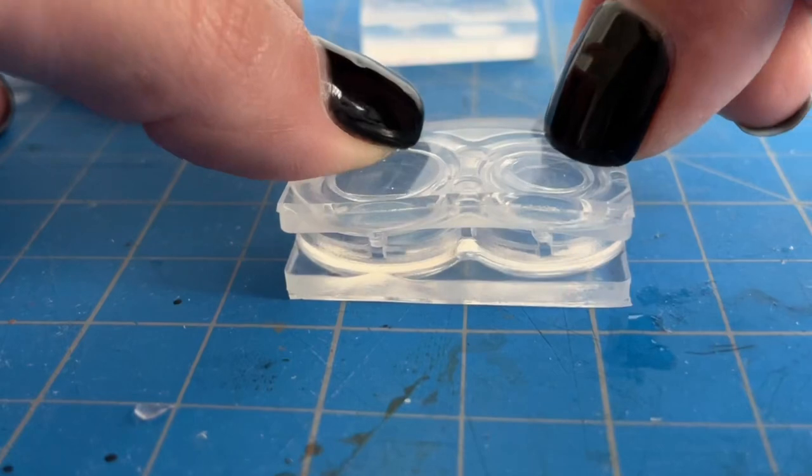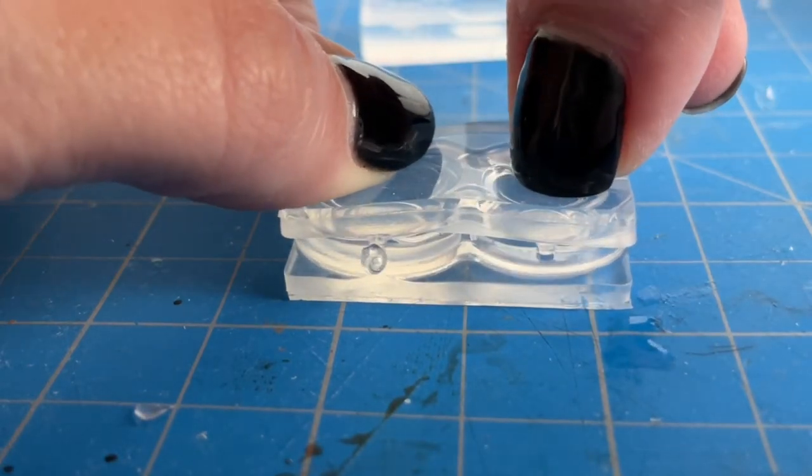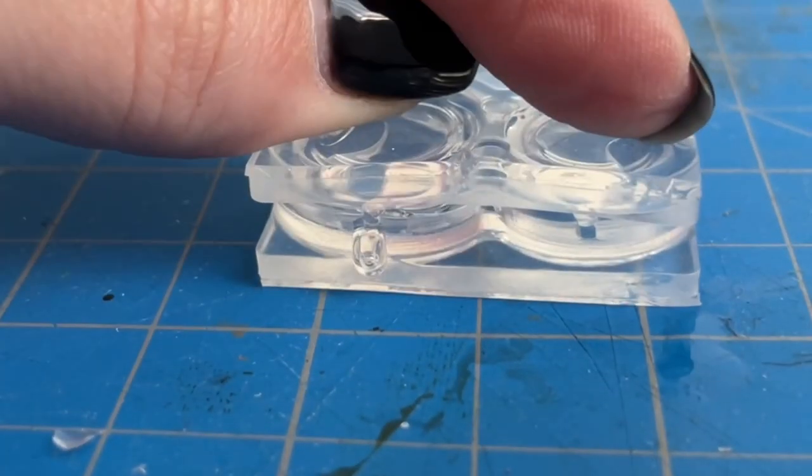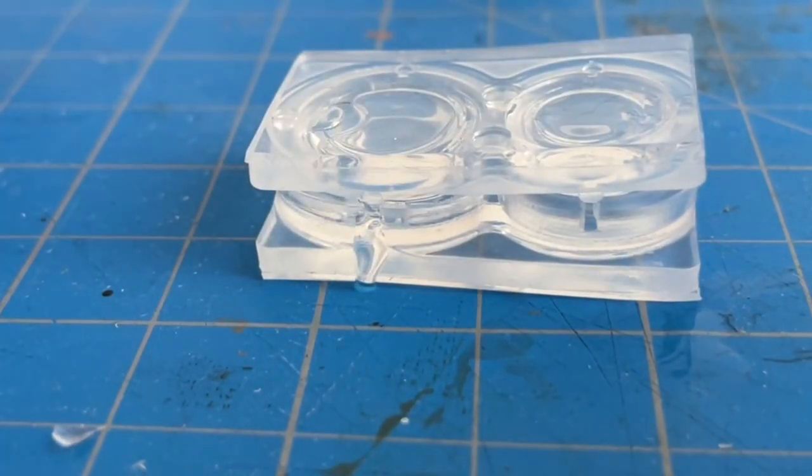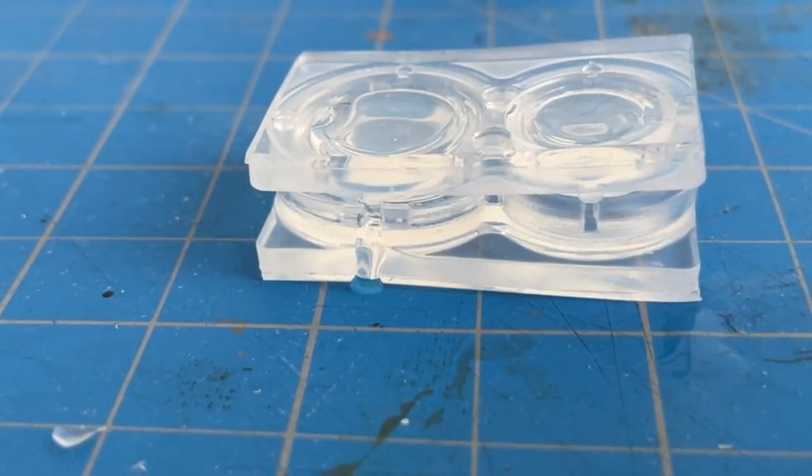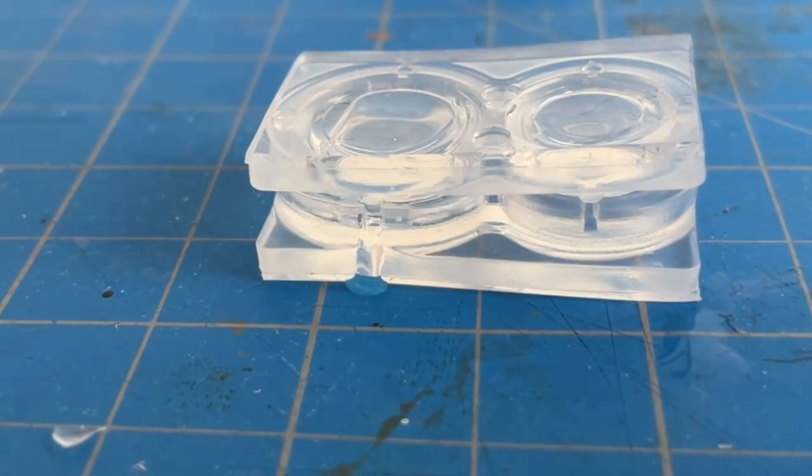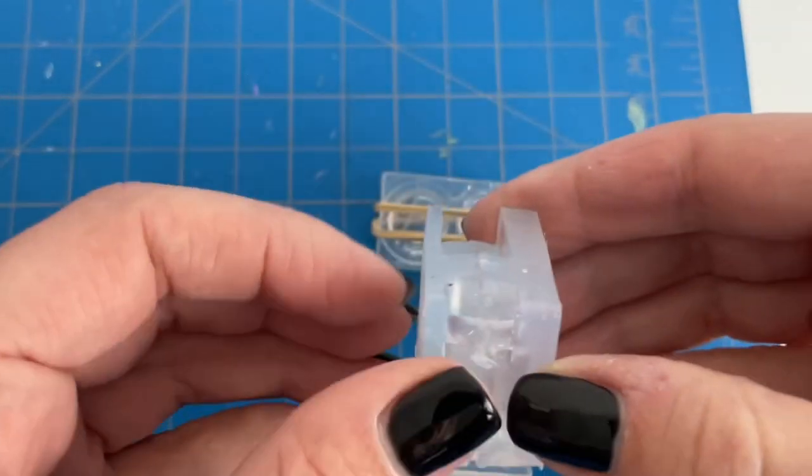And as I started squeezing these to get some of the air pockets out lots of resin started coming up from the sides so I tried to put a rubber band over it and put it underneath my UV light as fast as possible to cure and harden.